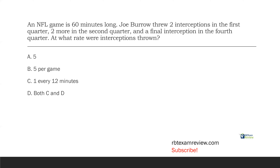Our answer here is both C and D. The lesson: one, don't just pick the first answer choice you like — read all of your answer choices. And two, be very familiar with rate and the specific rate being asked for. Since no rate was specified, both five per game and one every 12 minutes qualify.